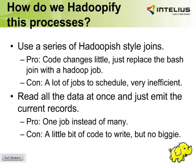Really, what we want to do is find a different way to do it. Another way is we could read all the data at once and just emit the current record. The pro is that instead of having all those little jobs to do those joins, we'll have one job that reads everything at once and emits what should belong in the current baseline. A con — which is not really much of a con — is that we'll have a little bit of code to write, but no big deal. So let's take a look at what that might look like.